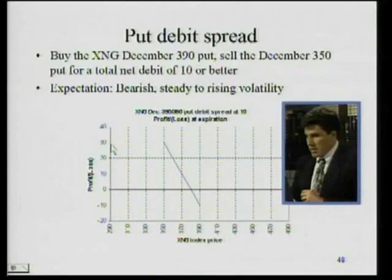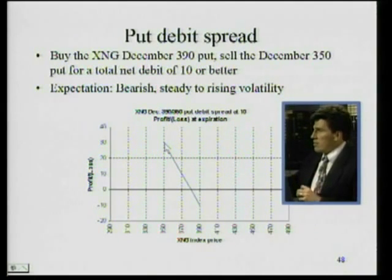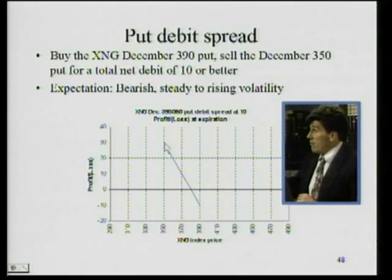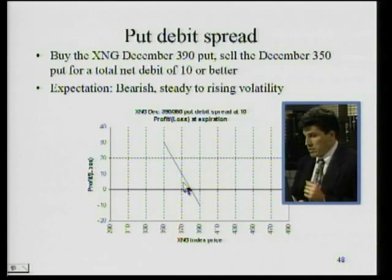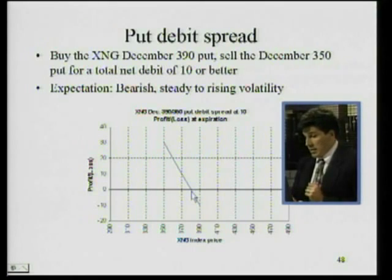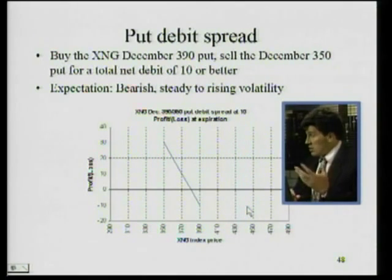The graph just shows the numbers we just calculated. You can see that, just like in the call spread, once it reached the strike price of the option that we sold, the profits peaked out. Same thing here — it reaches the strike price of the 350 and profits are capped. In between, profits are climbing, and once we get below our break-even at 380, the losses start accumulating and then max out. That's our max risk — the debit that we paid.